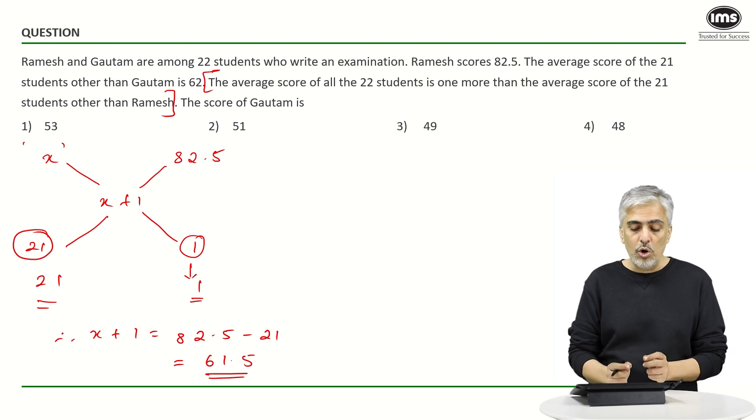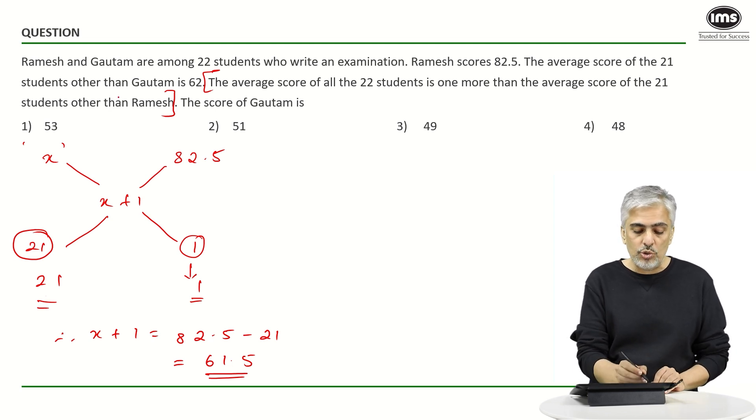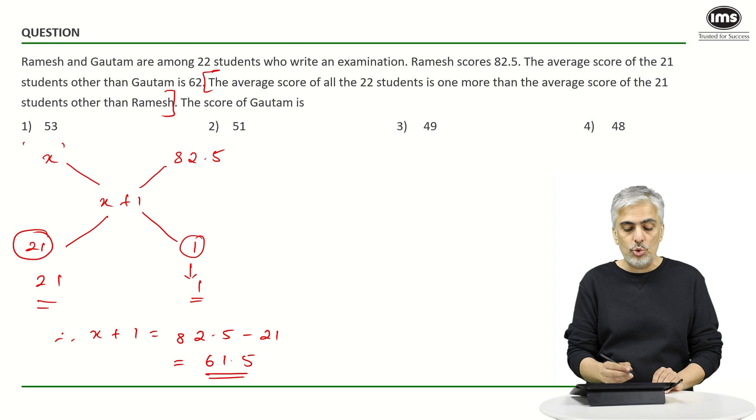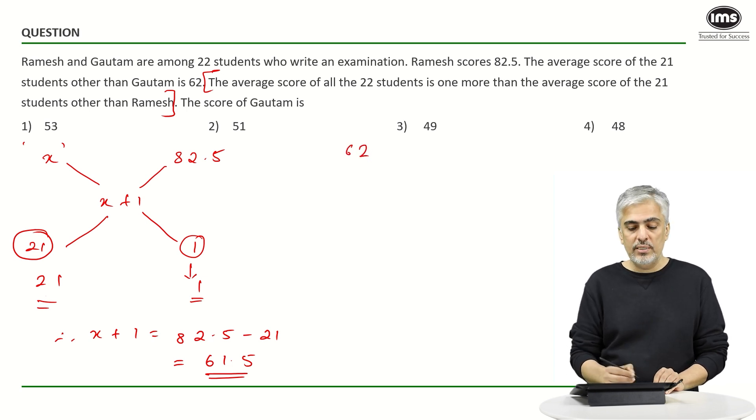Now in the second part of the question they have said, see the average score of 21 students other than Gautam was 62, that means 62 was the average of 21 students. Gautam's score if I take it as G, and the average for everybody else is 61.5.